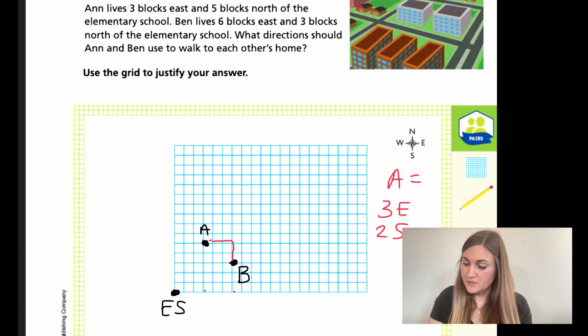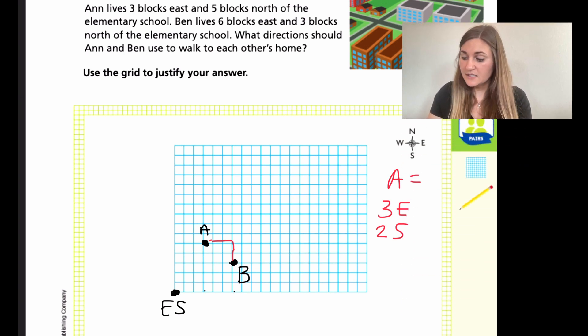Then for Ben, I'll change him to blue. He could go the opposite. He could go two north and three west. But since I already did the right, I'm just going to show you what it would be in blue. So I'm going to go one, two, three. So I did west first, going the other side. Three west. And then I have to go up to Ann's house. One, two. And up is north, so then I did two north. And that was for Ben's directions.